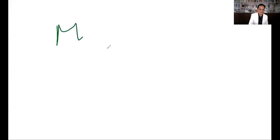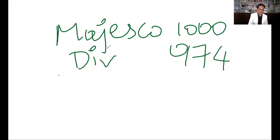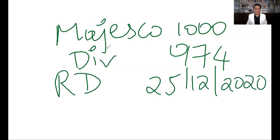Assume for example, Majesco share is currently available to you at Rs. 1000. Even though I know the share price is around Rs. 979.80, I am just taking it as an example to make things easy for you. Assume the share price is Rs. 1000 and you know there is a dividend of Rs. 974. Let us clearly understand there is something called record date. Now if you see the record date, 25th December 2020 is the record date fixed for Majesco. So all those people holding Majesco share on the record date, that is 25th December 2020, they will be eligible for dividend. So if you buy shares of Majesco right now, you will be surely eligible for dividend.